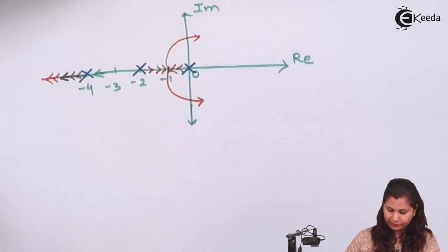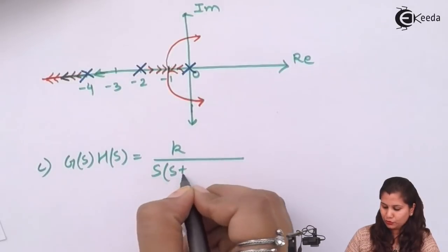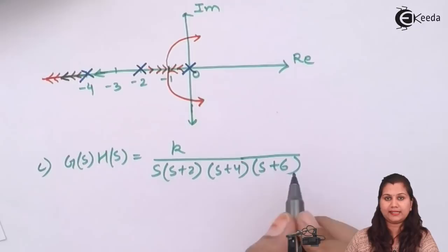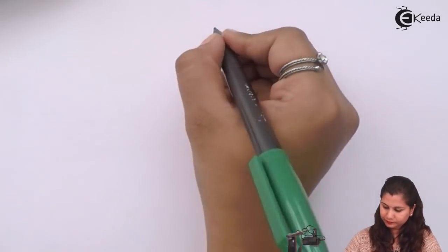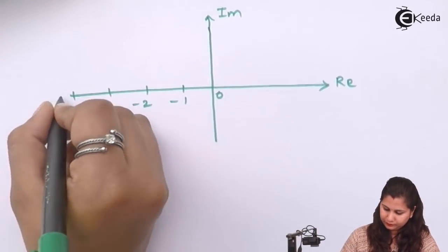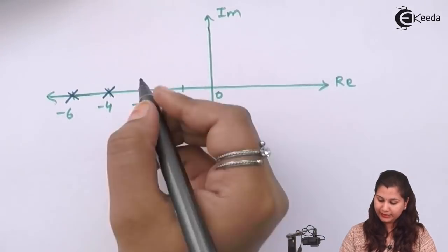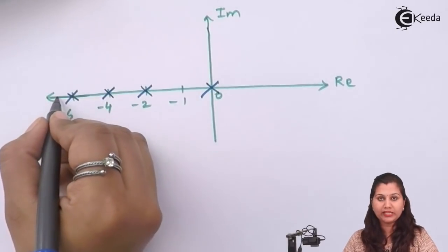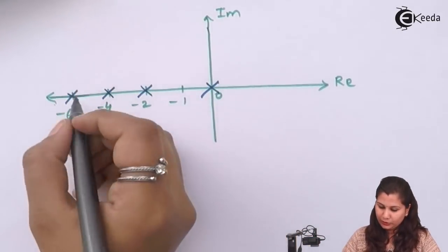Next we will have another transfer function. Let us add one more pole. This is k upon s(s+2)(s+4)(s+6). So we have added another pole at location s equals to minus 6. Let's see what are the changes in the location of the root locus. One pole is at s equals to minus 4, second pole at s equals to minus 6, one at s equals to minus 2, and one at s equals to 0. For the s equals to minus 6 pole, if we take a point here, then number of poles on right hand side will be 4, so the direction of root locus will be towards the origin.